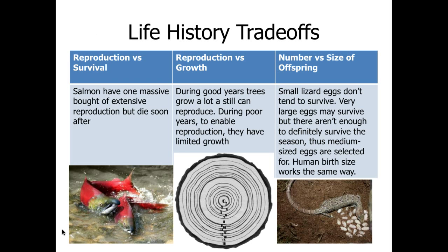Looking at reproduction versus survival, in the case of salmon, they tend to be selected for reproduction over survival. They will have massive bouts of reproduction — swimming upstream and braving environmental hazards, risking getting eaten by bears to spawn. They'll have the opportunity to lay thousands of eggs, but then they die. So: a lot of reproduction, short survival.